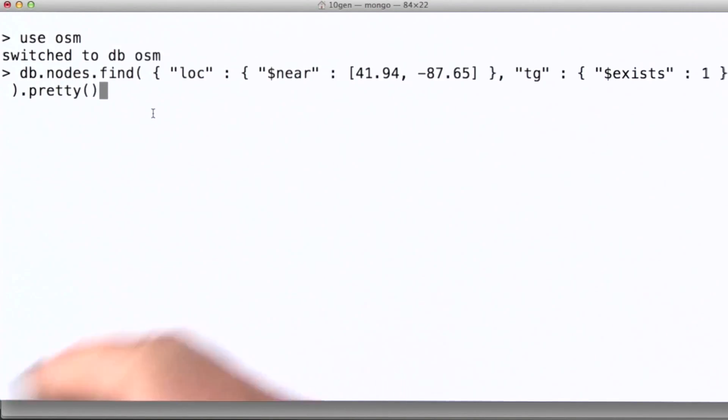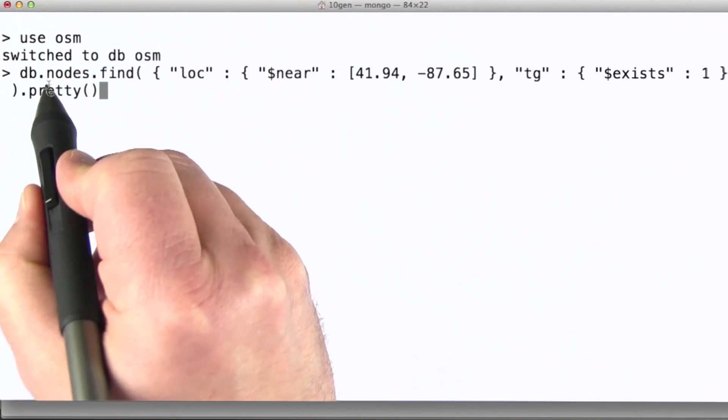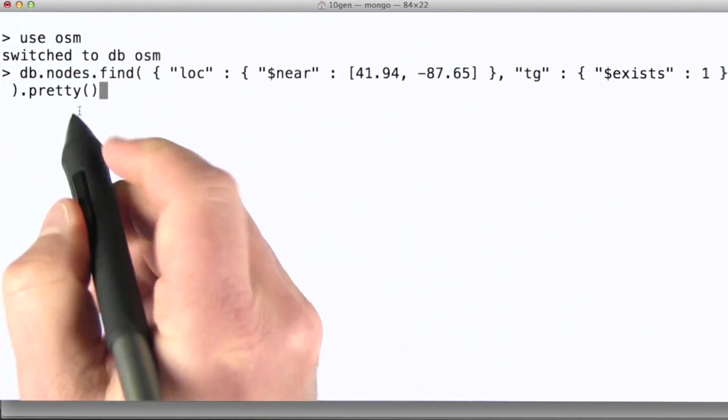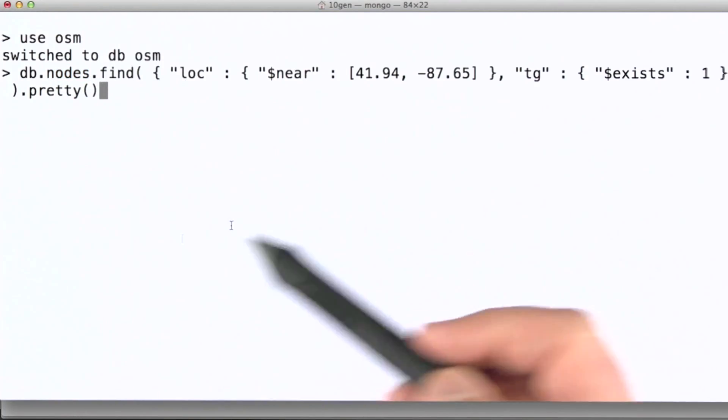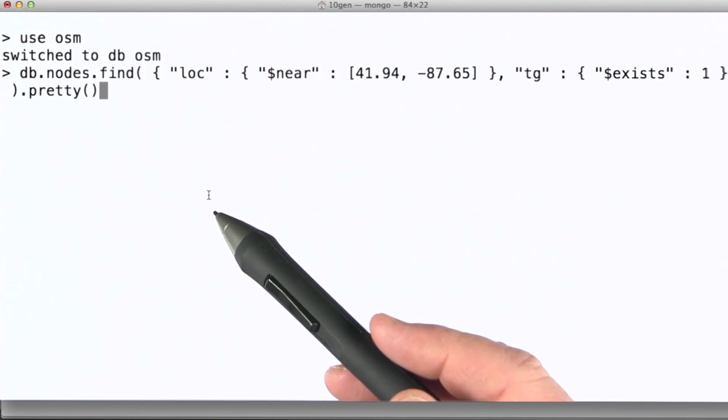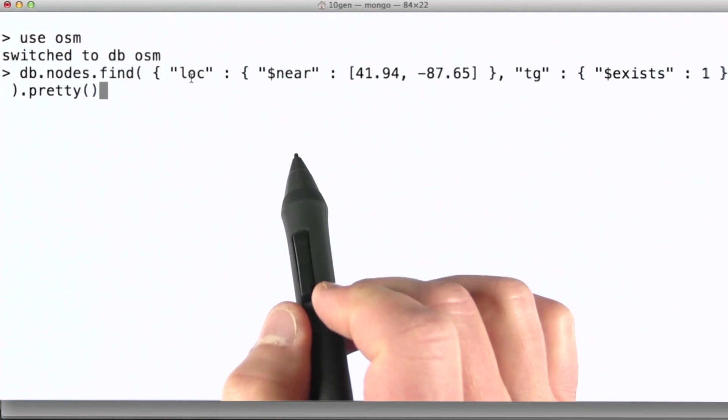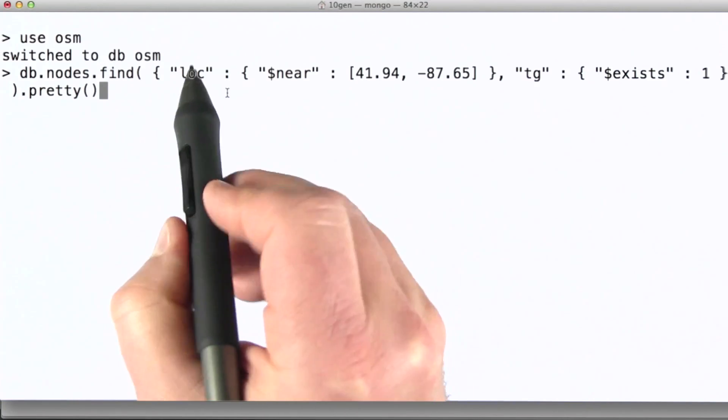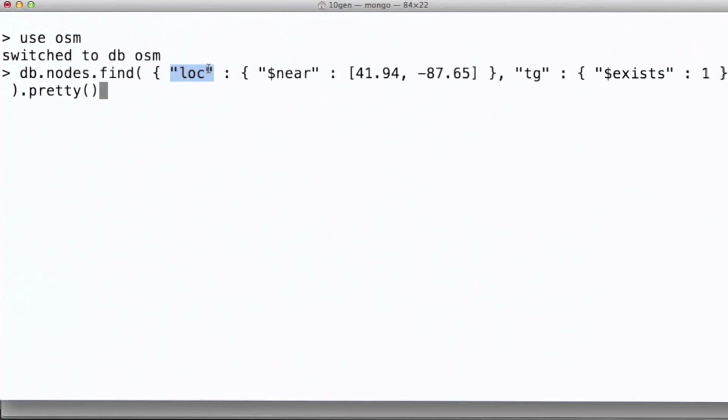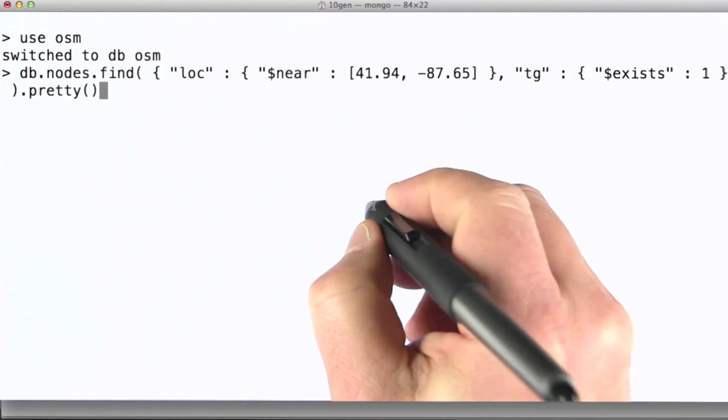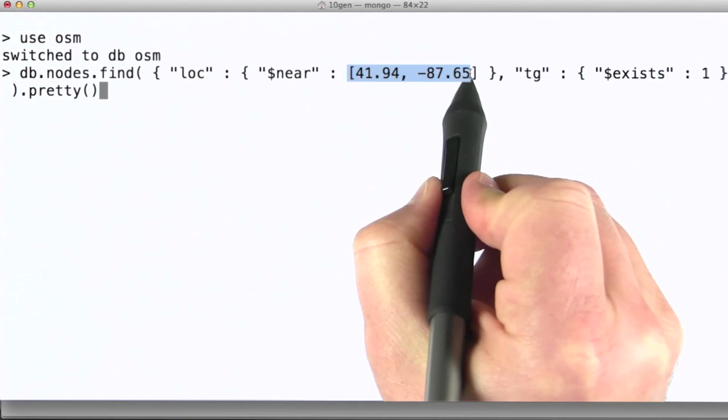I'm going to query the nodes collection. That script we just looked at actually created several collections. One of which is nodes. These are based on the nodes tags that appear in the OSM data set. We're using the Chicago OSM data set just for point of clarification. What I'm going to do here then is query this particular collection. Note that I'm querying against the location field and I'm using the near operator, and I'm specifying a set of coordinates here.